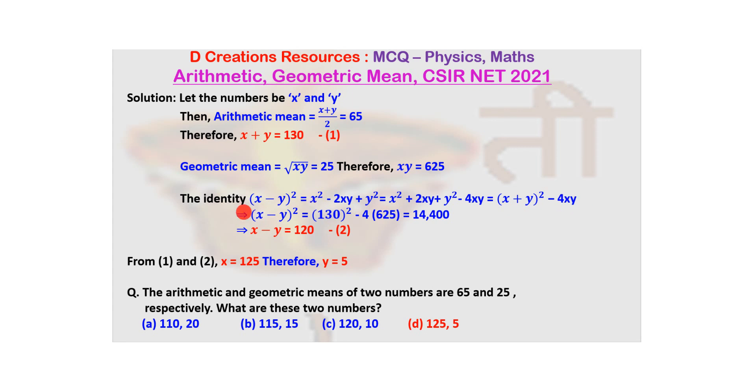So (X - Y)² can be written as (X + Y)², which is 130², minus 4 times XY, which is 625. So (X - Y)² = 130² - 4(625). If you remember squares, I would suggest it's always good to remember squares at least up to 25. So 13² = 169, therefore 130² = 16,900.